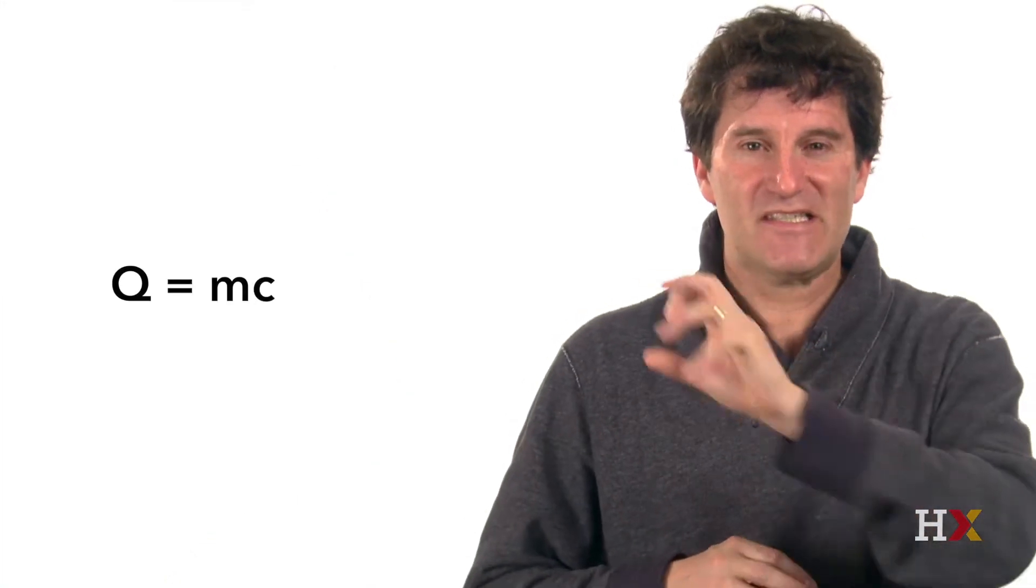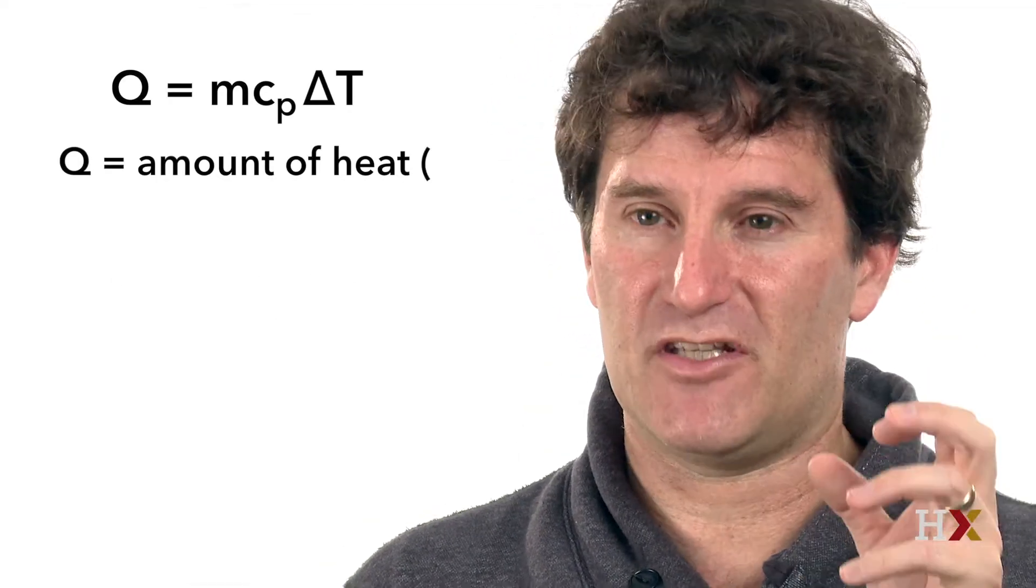Now having said that as introduction, let me go into the equation. The equation says that Q equals m c_p delta T. So Q is the amount of heat that you've dumped into the food, and that is a quantity that is measured in joules.